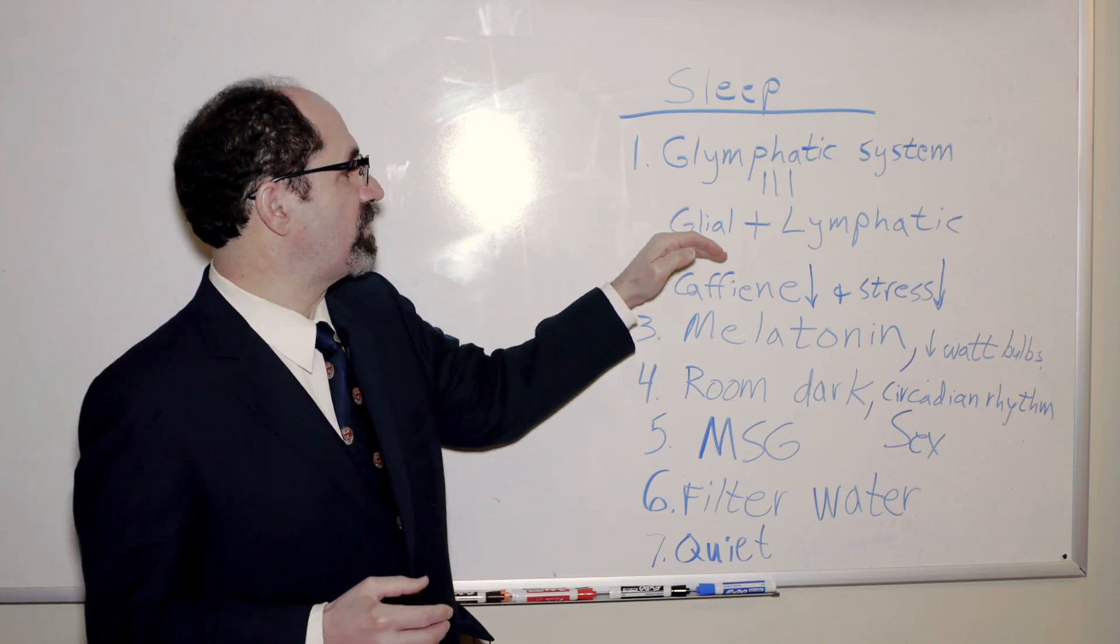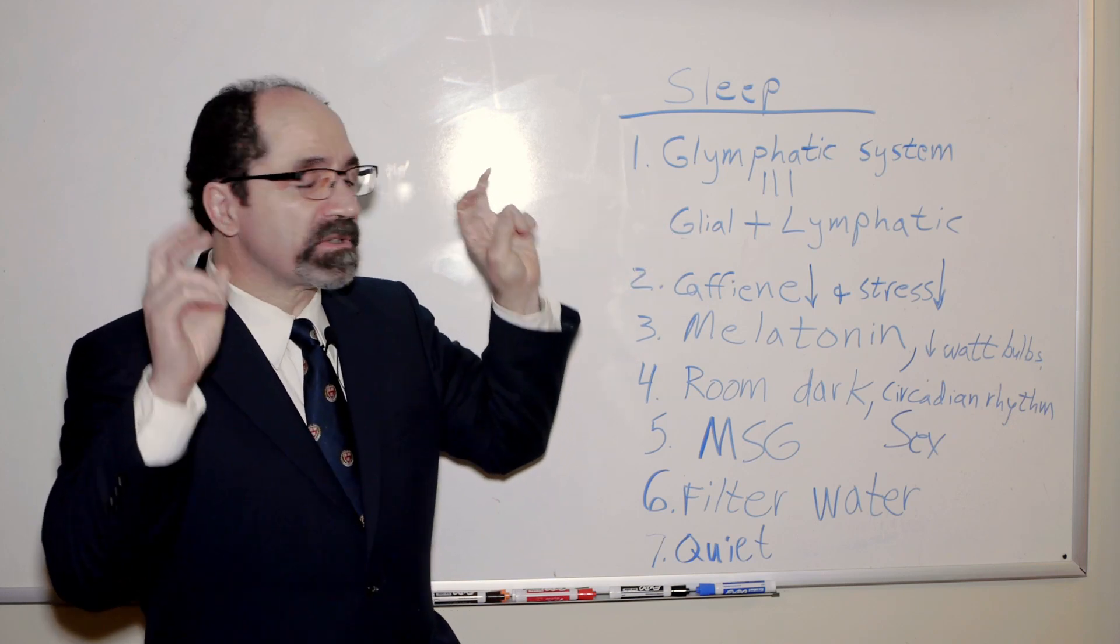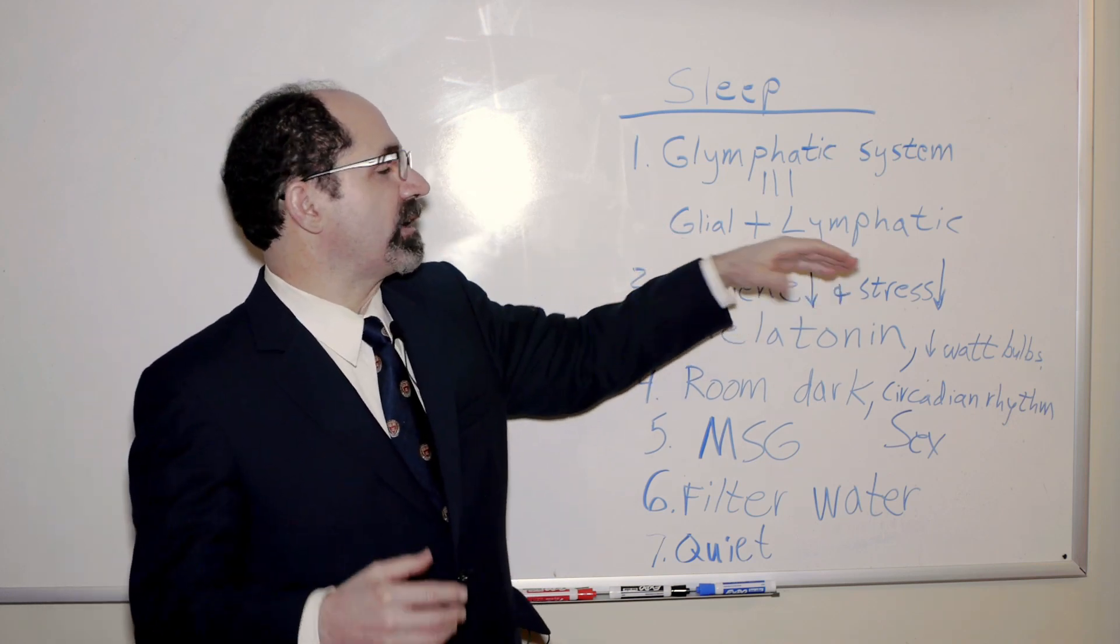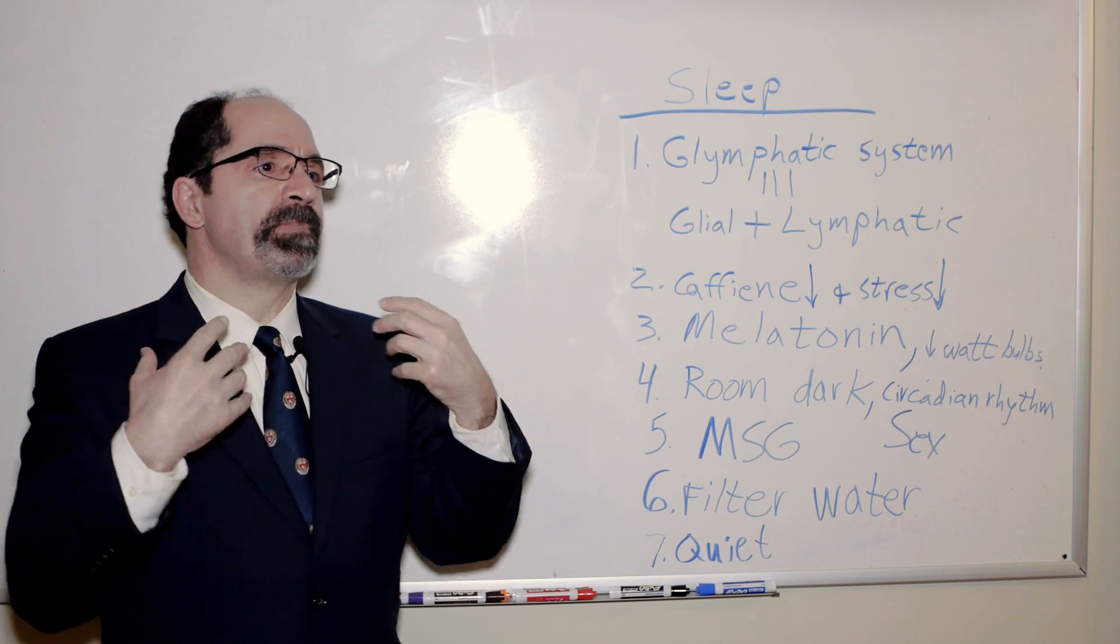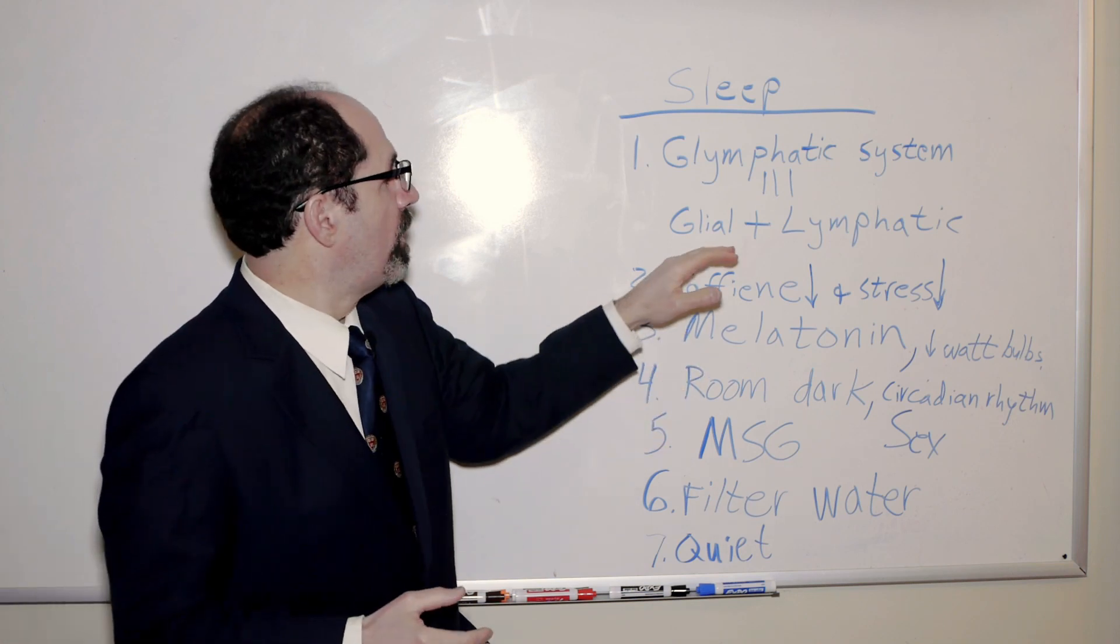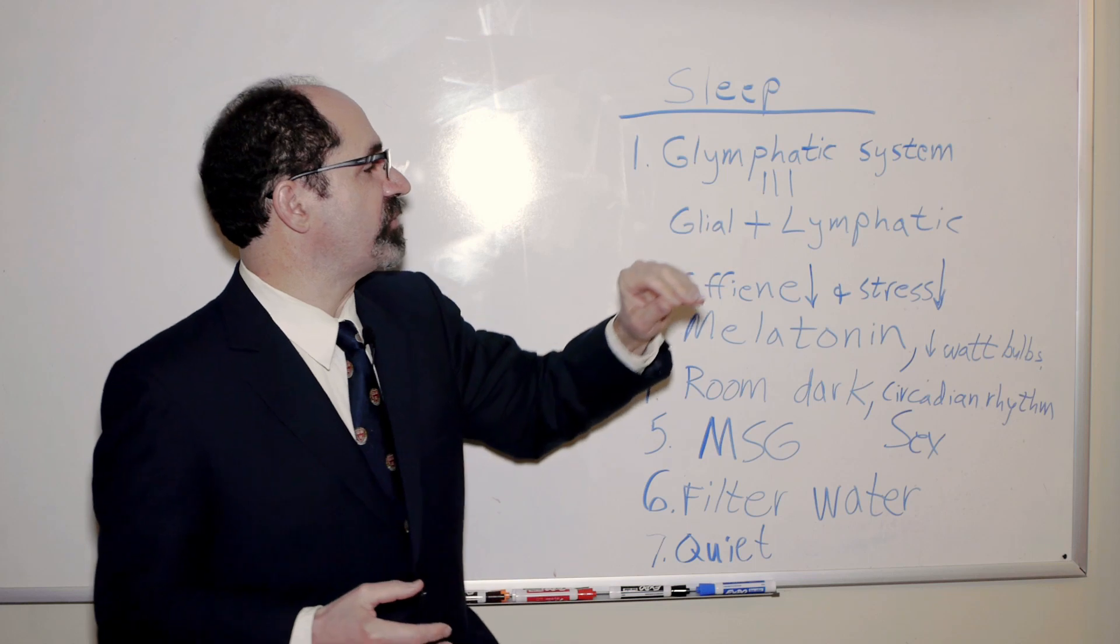So, glymphatic system stands for glial, which means like glue in another language, and lymphatic, lymphatic system, your immune system, your blood clearance system. These are brought together as a contraction, glymphatic system.